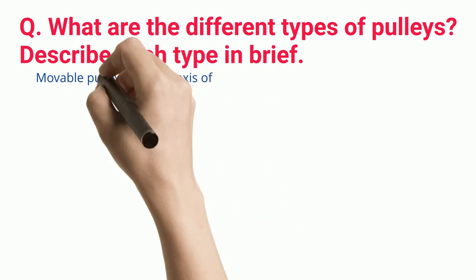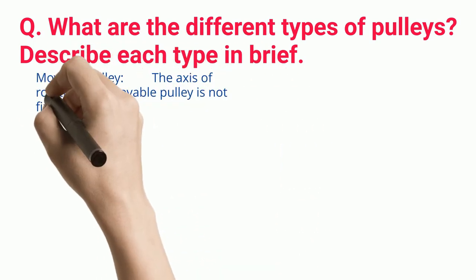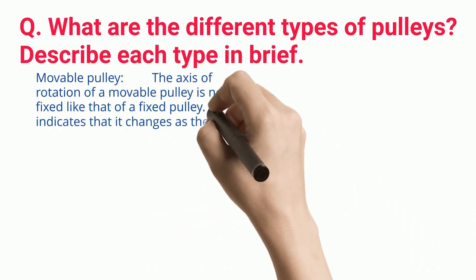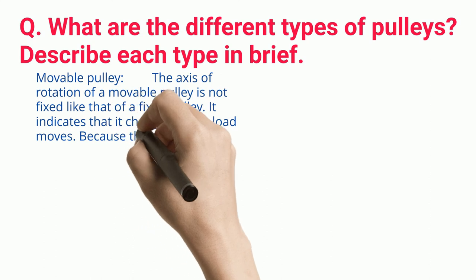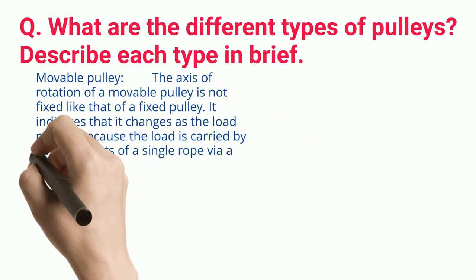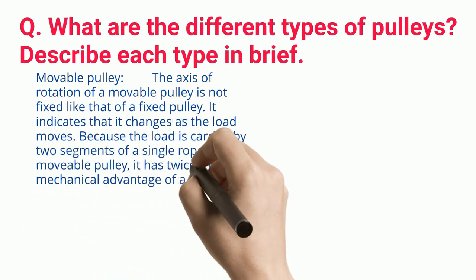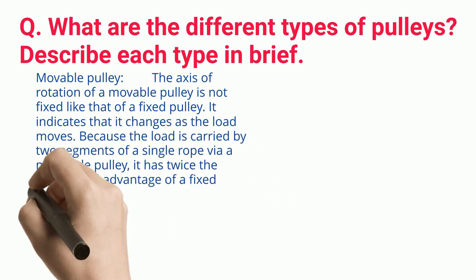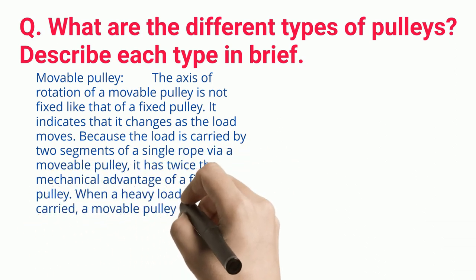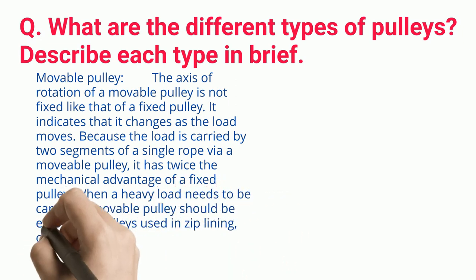Moveable Pulley. The axis of rotation of a movable pulley is not fixed like that of a fixed pulley; it changes as the load moves. Because the load is carried by two segments of a single rope via a movable pulley, it has twice the mechanical advantage of a fixed pulley. When a heavy load needs to be carried, a movable pulley should be employed. Pulleys used in zip lining, cargo lifts, and construction equipment are examples of movable pulleys.